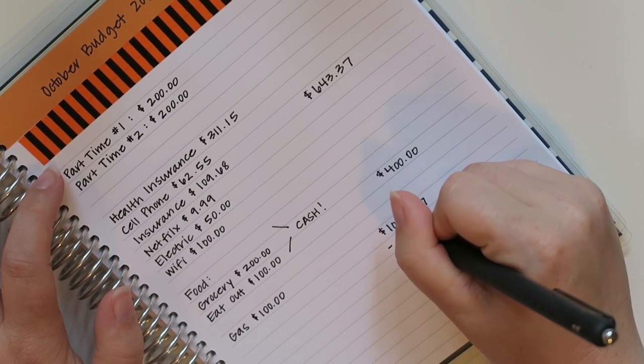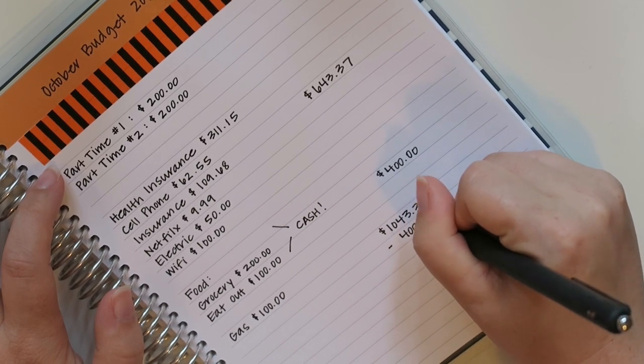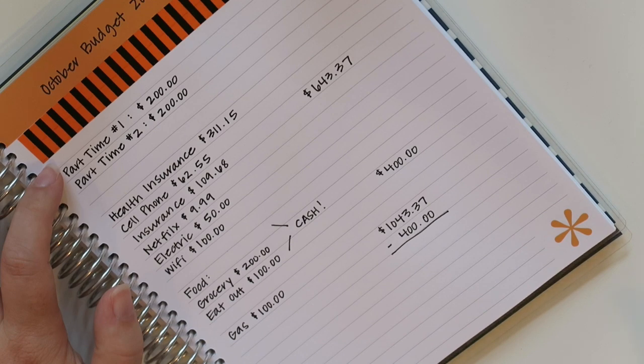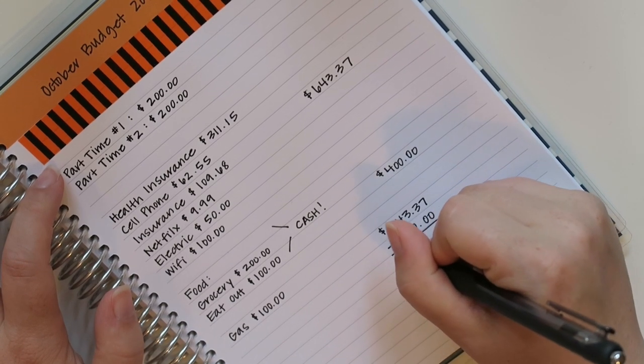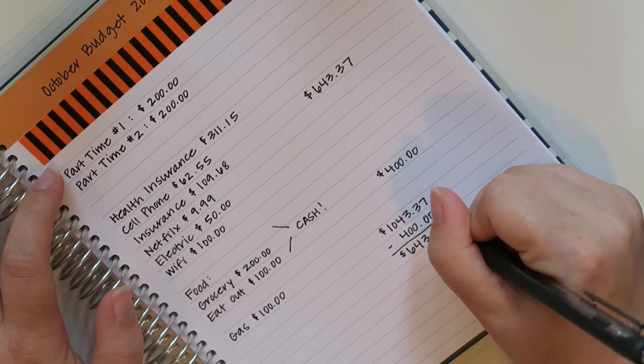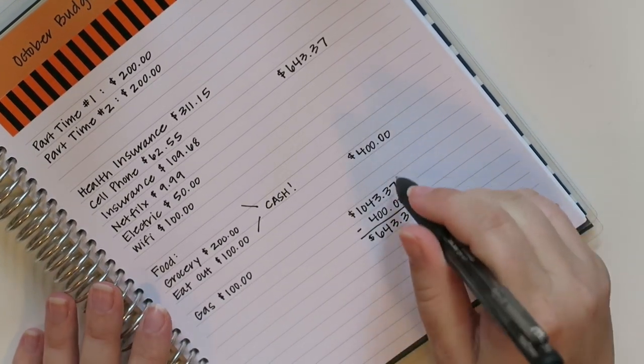Okay. Minus the $400 that I'm possibly expecting from my second job. So really I need to come up with the $643 and 37 cents, which is living pretty minimally.